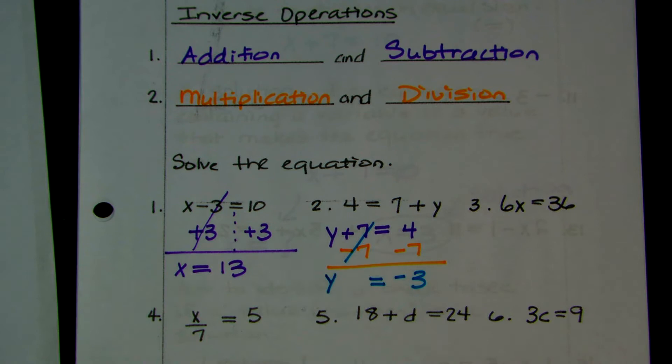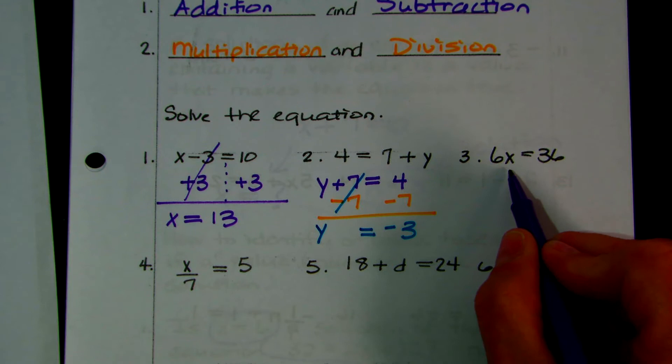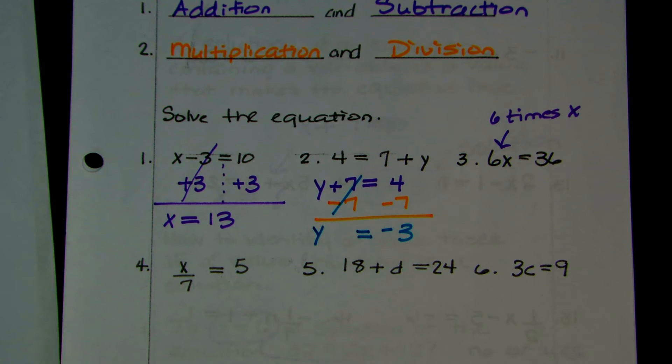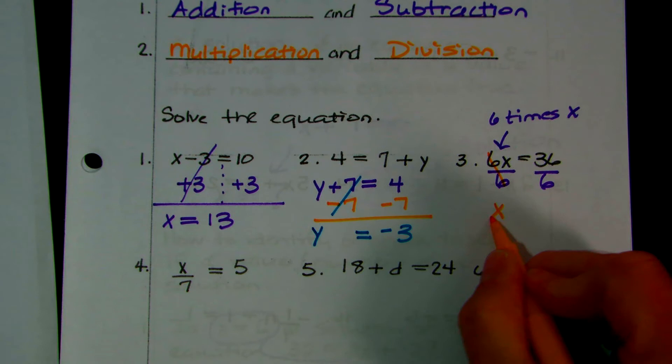Look at number 3. Do you remember how to read this? This says 6 times x — we say 6x, but we have to remember that this is 6 times x. What is the opposite of multiplication? Division. So we're going to divide both sides by 6. Then 6 divided by 6 cancels, and you have 1x — just write x. And then 36 divided by 6 is 6.